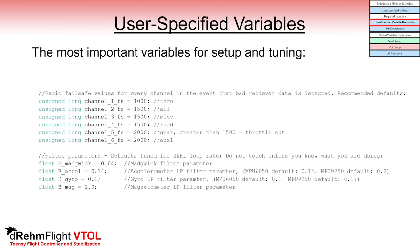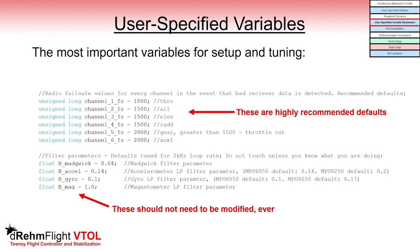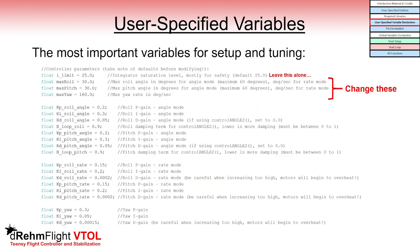The user specified variables are the most important for general setup. First, you'll find the radio failsafe values, which are used if the receiver becomes disconnected from the microcontroller — these values are highly recommended defaults. There are also some filter parameters that can be tuned, but they shouldn't be modified unless you really know what you're doing. The next parameters are the max roll, pitch, and yaw variables, which specify the maximum angle or angular rates that can be commanded depending on the controller type used in the void loop.